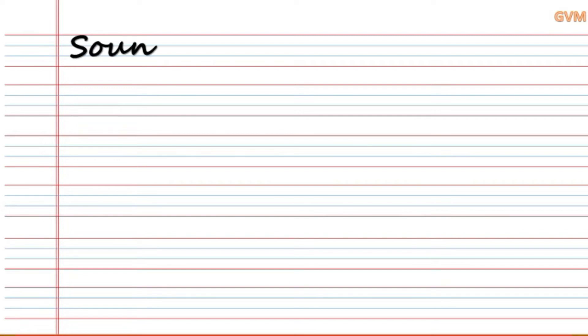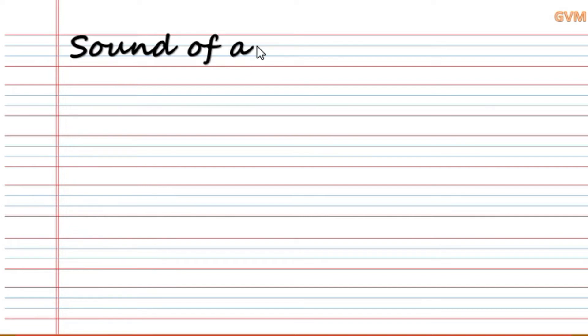First line में हम लोग write करेंगे: S-O-U-N-D, sound, O-F, of, A — Sound of A. Repeat after me children: Sound of A, means जिसका sound A से आता है।